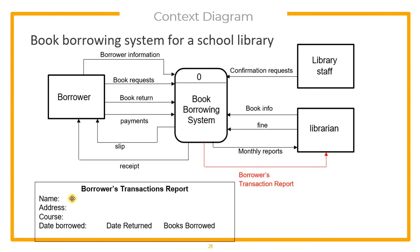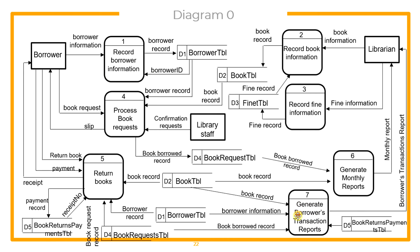Then we have the borrower's transaction report. The librarian expects to see or print the name, address, and course of a specific borrower together with the date borrowed, date returned, and books borrowed. That is our process 7. To get the borrower's information, we retrieve from the borrower table. To get what books were borrowed, we retrieve from the book table. To know when books were borrowed, we retrieve from the book request table. To identify when books were returned, we retrieve from the book returns payment table. When generated, the report is given to the librarian.